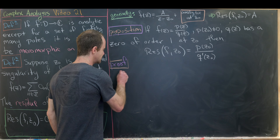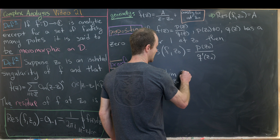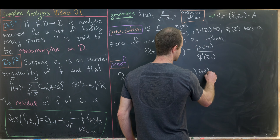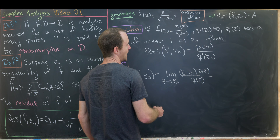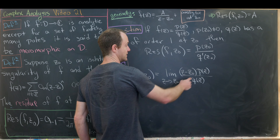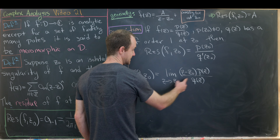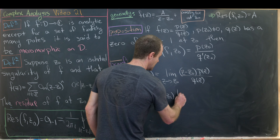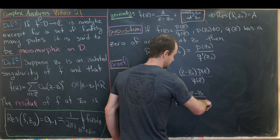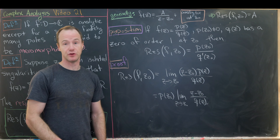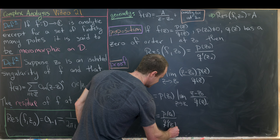By our previous result, the residue at z₀ is the limit as z → z₀ of (z − z₀)·p(z)/q(z). Since p(z₀) ≠ 0 and p is analytic, we can factor it out to get p(z₀) times the limit of (z − z₀)/q(z). But that limit is just the reciprocal of the derivative of q at z₀ by the definition of the derivative, giving us p(z₀)/q′(z₀).